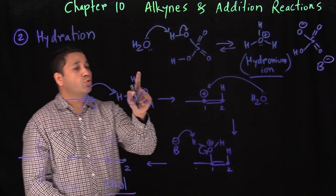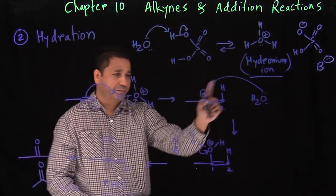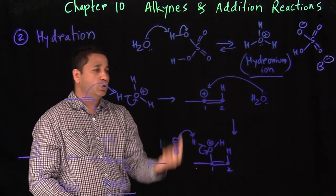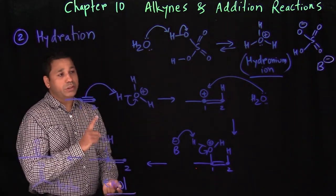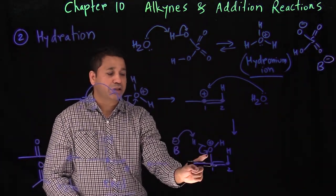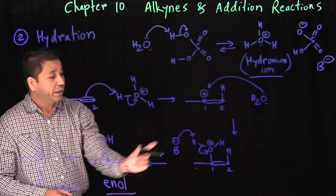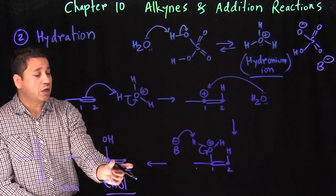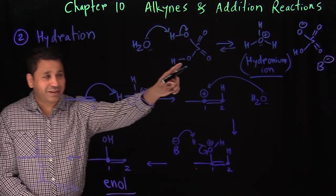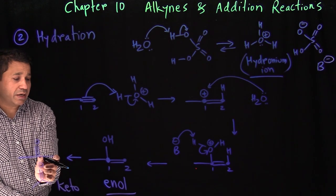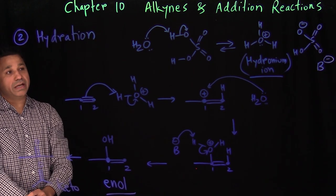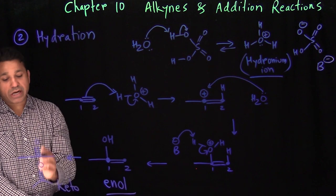In hydration, we only add water one time — unlike hydrohalogenation where we added HCl twice. After the first step: acid-base, then water attacks carbon one, then neutralize the charge. The enol forms and immediately changes to the keto. After the keto forms, there is no carbon-carbon double bond left, so the reaction stops there.